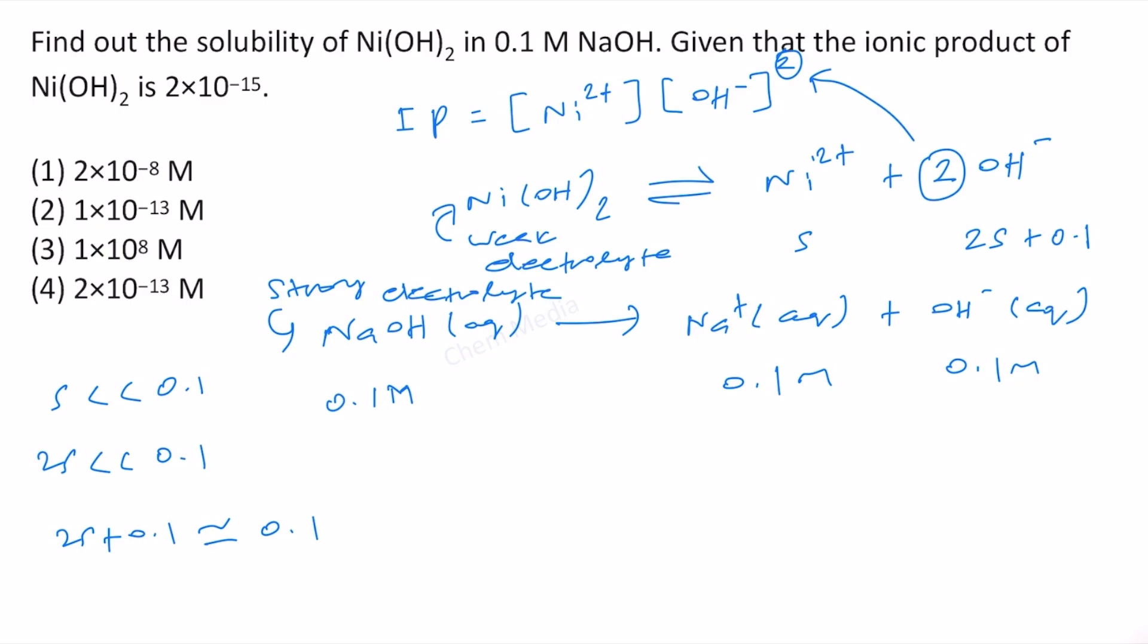Therefore the ionic product that is given, 2 times 10 to the power minus 15, is equal to s times 0.1 square. Therefore s is equal to 2 times 10 to the power minus 15 divided by 0.01.